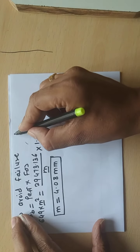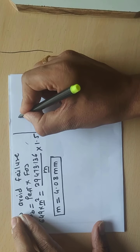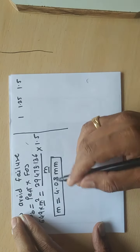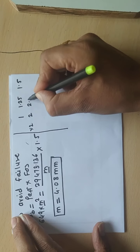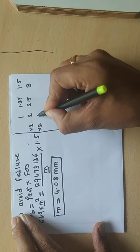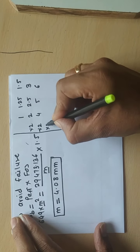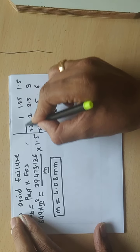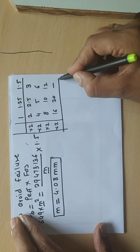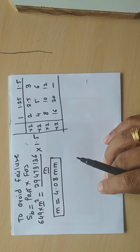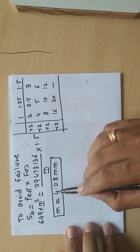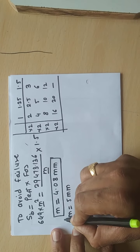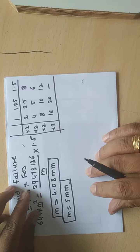Now select the first preferred value from the Choice 1 series: 1, 1.25, 1.5, 2, 2.5, 3, 4, 5, 6, 8, 10, 12, 16, 20. After 4.08, the next value is 5 mm. Therefore select M = 5 mm as the first preferred module.